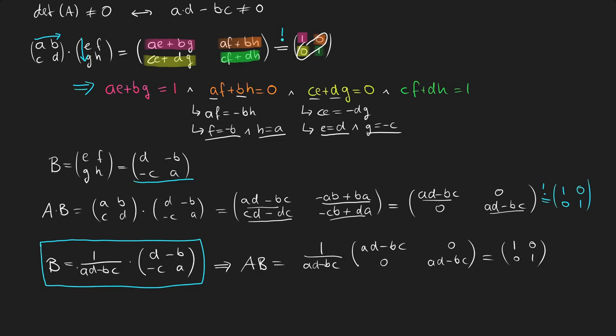Now you might have one more question, which is what happens if AD minus BC is 0. Well, we could just exclude this case, but if you look at the beginning of the exercise, we have defined that AD minus BC is not equal to 0. That is because from the task is given that the determinant of A is not equal to 0, and therefore we know that we will never divide by 0.